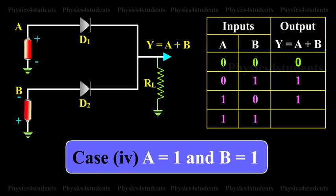Case 4: A is equal to 1 and B is equal to 1. When A and B both are high, both diodes D1 and D2 are conducting and the output is high.